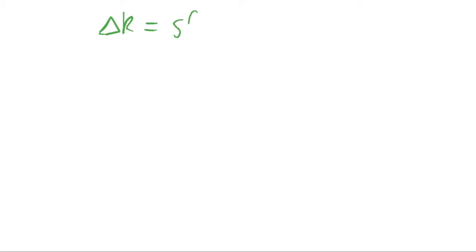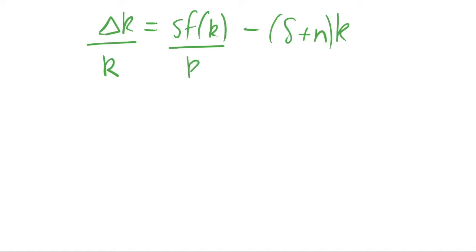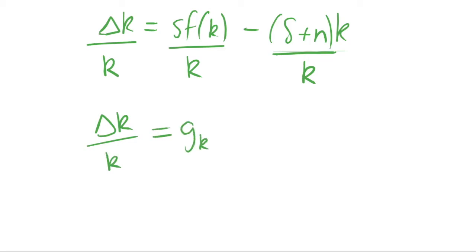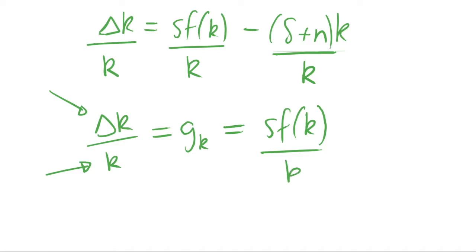We're going to start with our fundamental equation of the Solow model, which says that the change in capital equals investment minus break-even investment. We're simply going to divide through both sides by capital per capita. All the terms are divided by capital per capita, so we get that this first term is actually the growth rate of capital per capita — the change in capital per capita divided by capital per capita. This equals our investment term divided by capital per capita.